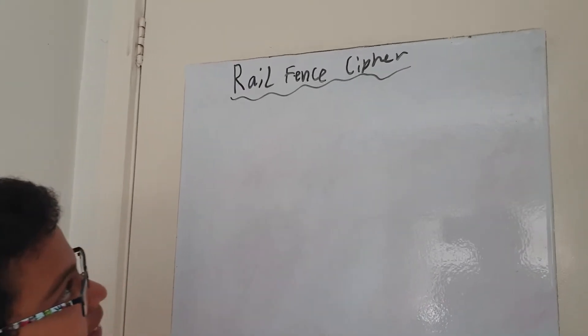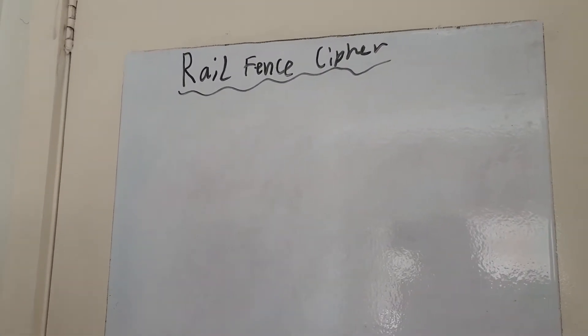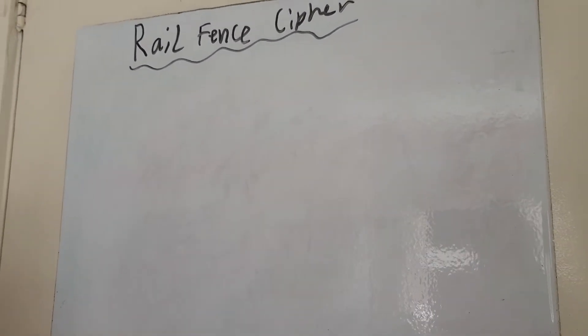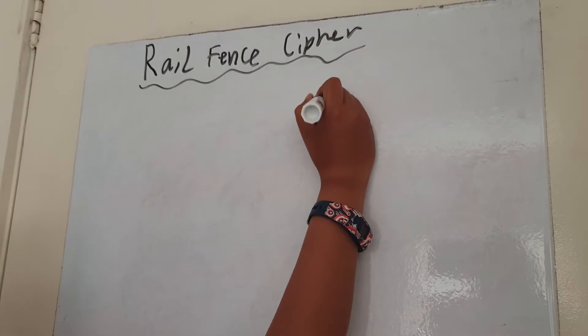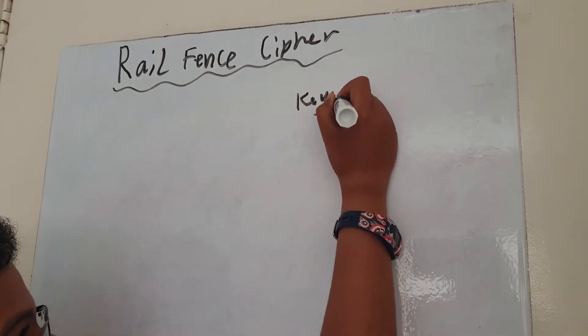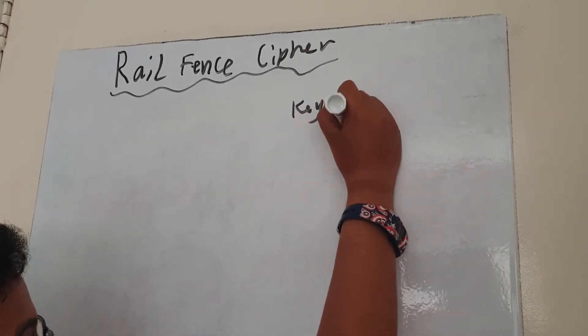So basically you need two things for a Rail Fence Cipher. You need a message which you'll be encrypting, and you need a key. So the key is a number. One isn't a good key as you'll see why, but I'm just going to choose three.